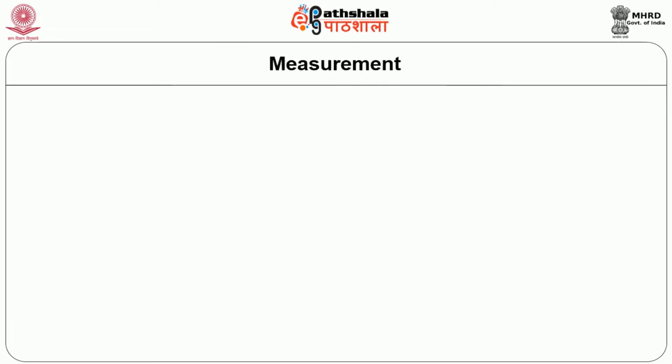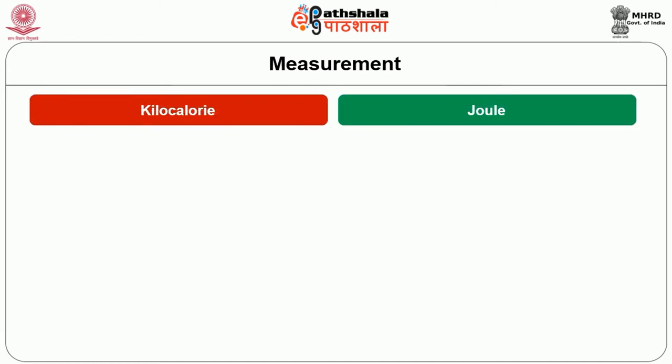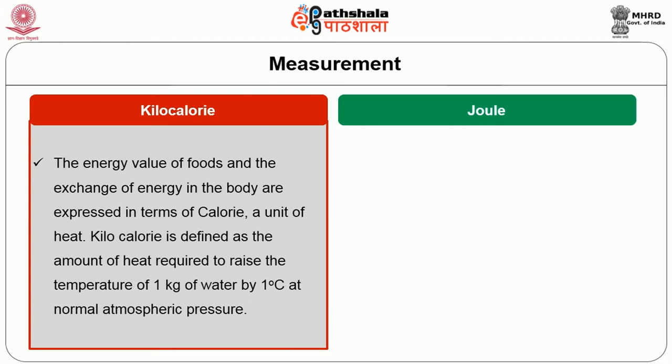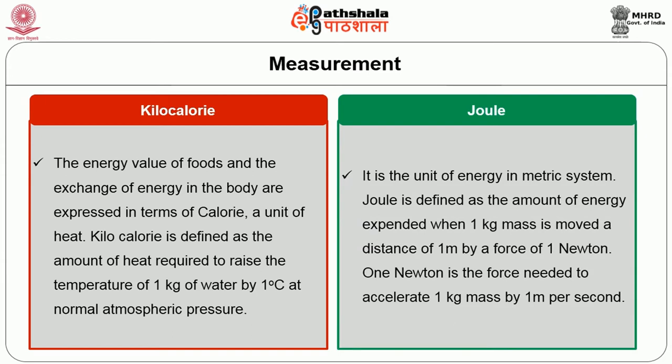Energy is measured in terms of kilocalories and joules. The energy value of foods and the exchange of energy in the body are expressed in terms of calorie, a unit of heat. Kilocalorie is defined as the amount of heat required to raise the temperature of 1 kg of water by 1 degree centigrade at normal atmospheric pressure. Joule is the unit of energy in the metric system, defined as the amount of energy expended when 1 kg mass is moved a distance of 1 meter by a force of 1 newton.